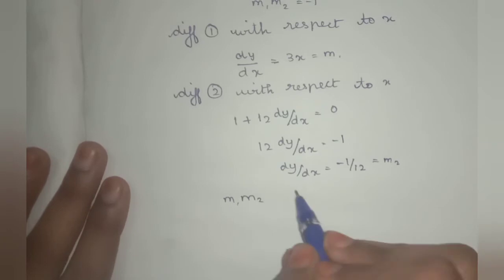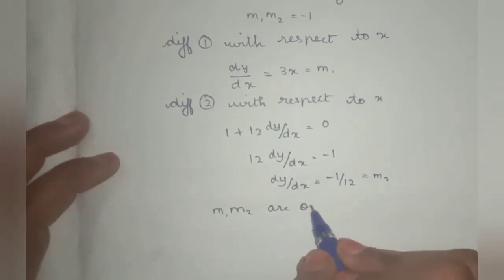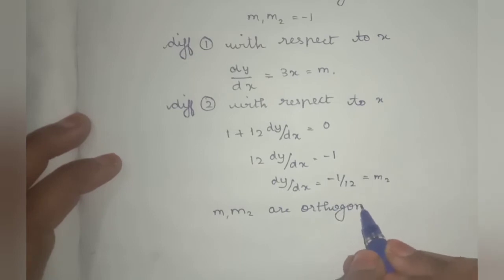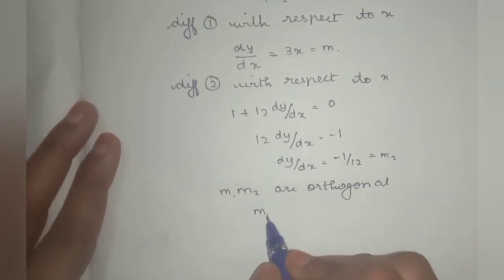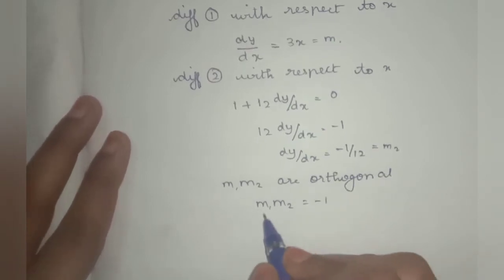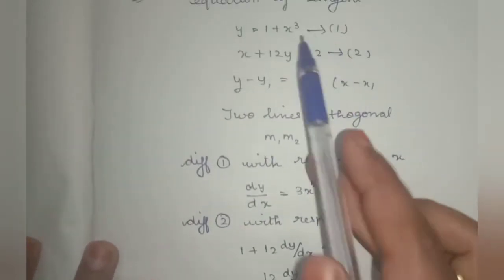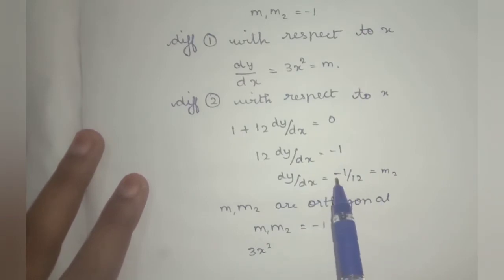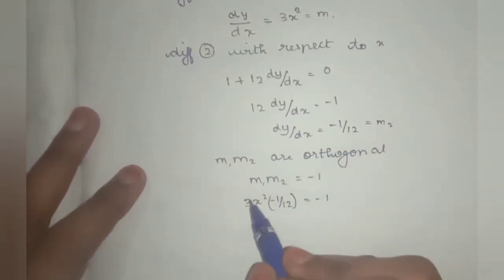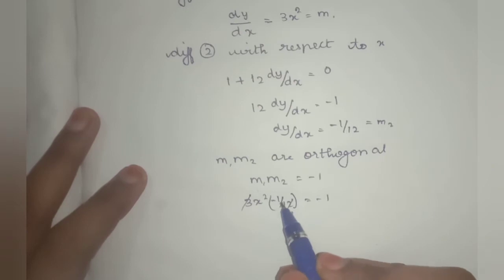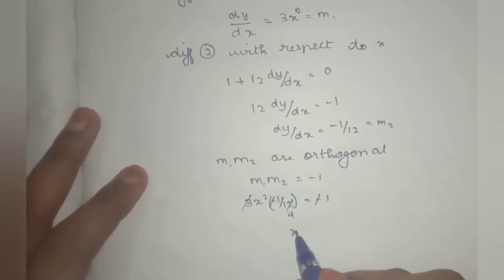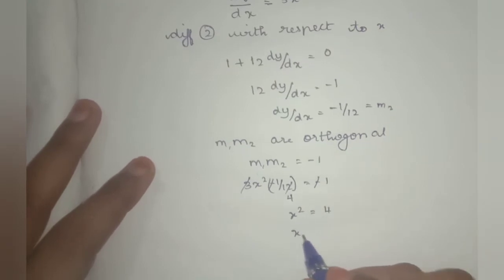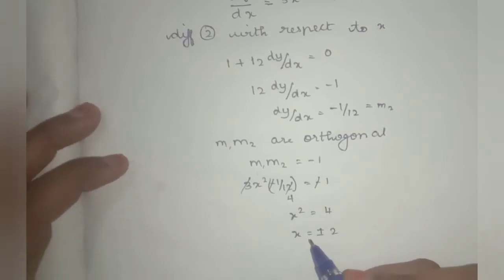Since m1 and m2 are orthogonal, m1 times m2 = minus 1. So 3x² times (minus 1/12) = minus 1. The minus 1s cancel, giving 3x²/12 = 1, so x² = 4, therefore x = plus or minus 2.